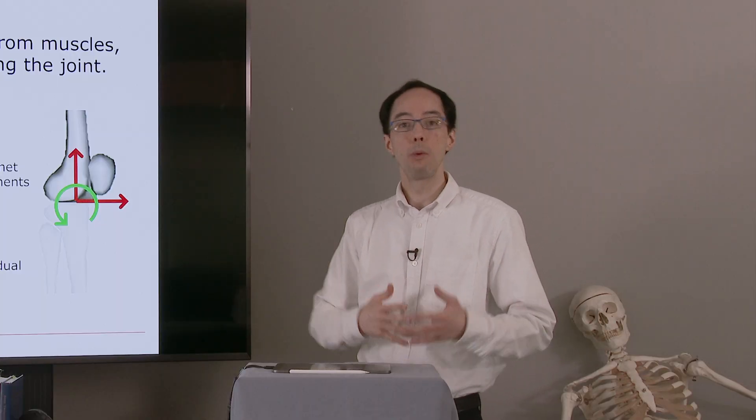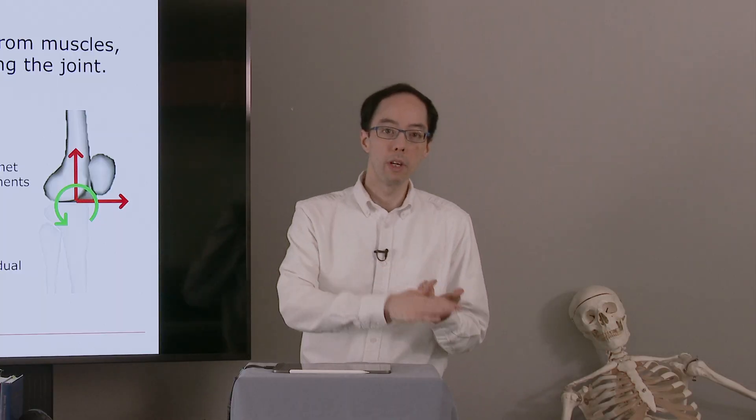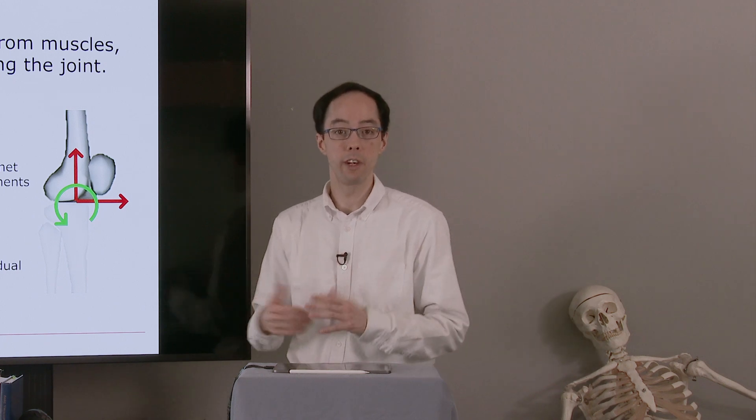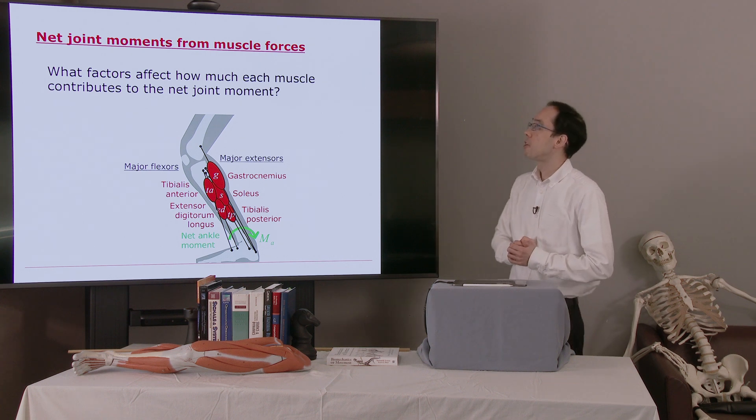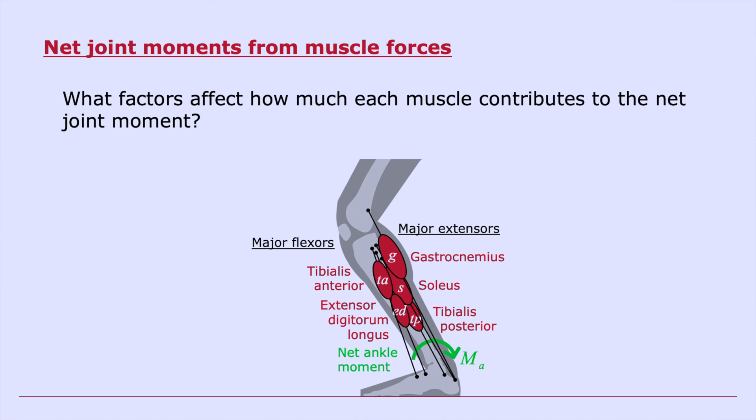Once we know what the muscle forces were, we can go on to look at muscle coordination, metabolic cost, and a whole lot of other variables that are very interesting. So what factors affect how much each muscle will contribute to a net joint moment? There are a bunch of muscles here in this little diagram. We have major extensors, gastrocnemius, soleus, tibialis posterior. The major flexors on the other side, the TA and EDL. And for these five muscles, how would the body select from among these five muscles? How would they be coordinated to produce a net ankle moment?